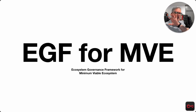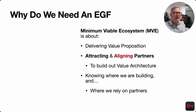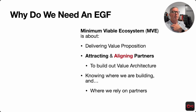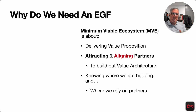So EGF — ecosystem governance framework for MVE, minimum viable ecosystem — is really what we're talking about here. A minimum viable ecosystem is there to deliver a value proposition, but really key, especially in the beginning stage as we get things jump-started, is attracting and aligning the partners that come in, because they're going to help us build the value architecture. We're also going to know better where we need to build, where we want to build, and where we're relying on those partners to do the work in the overall value architecture.